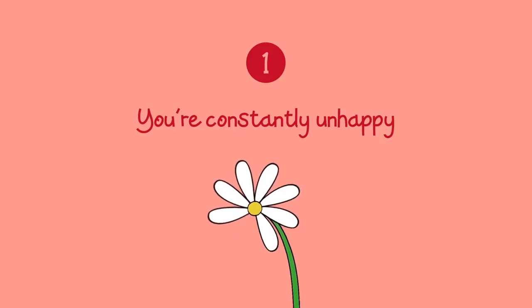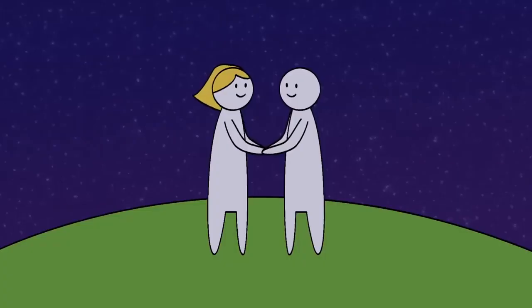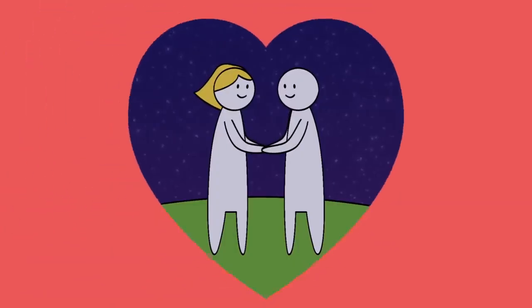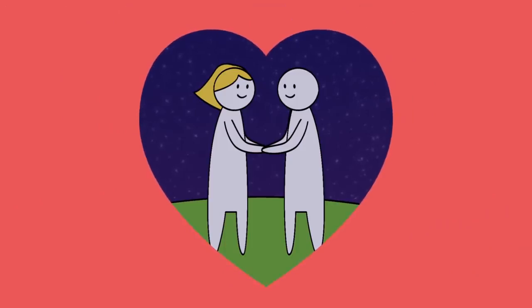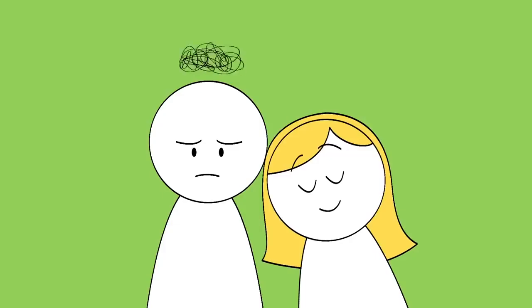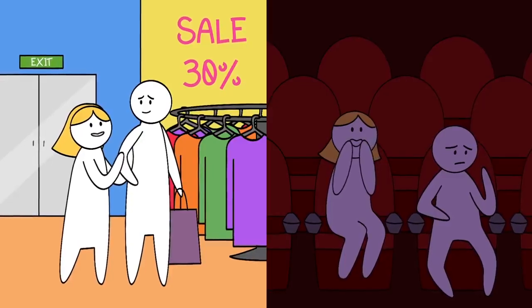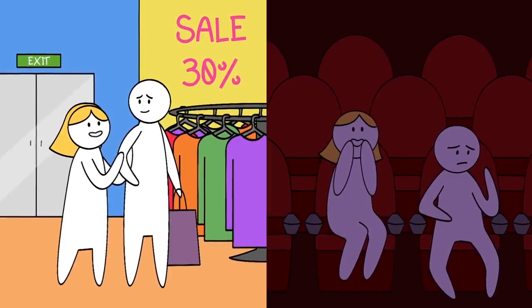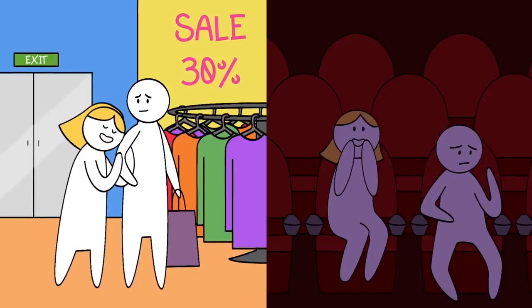One, you're constantly unhappy. Remember, loving relationships are supposed to be some of the most enjoyable parts of life. If you're constantly unhappy while in a relationship, you may be with the wrong person. This is especially true if you're feeling unhappy even when you're hanging out together and going on dates.